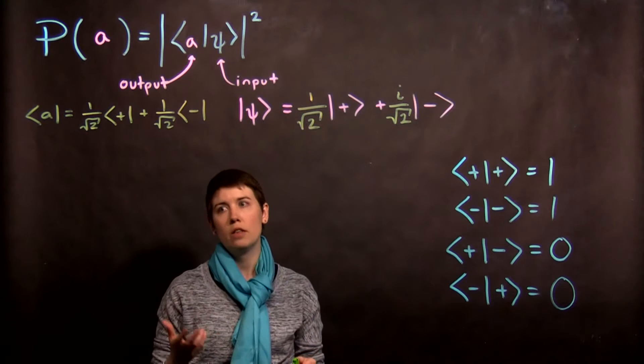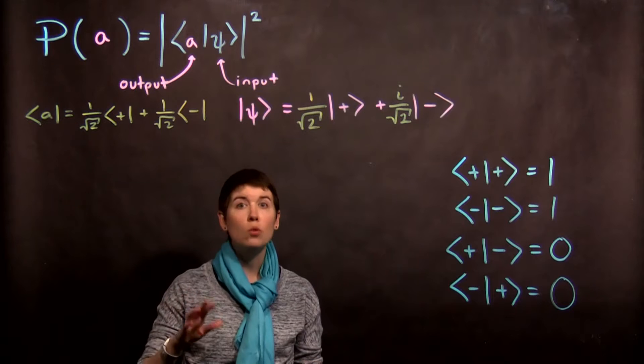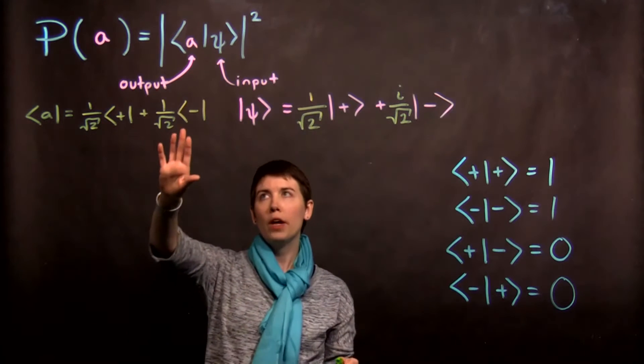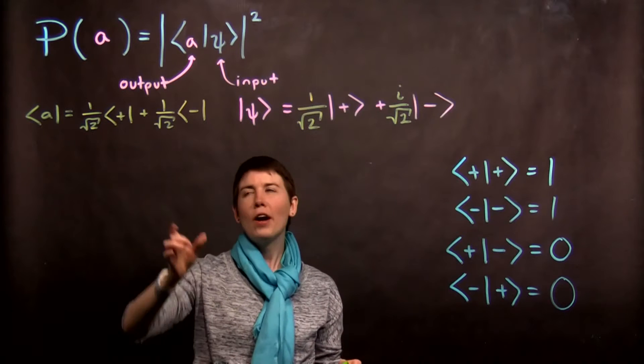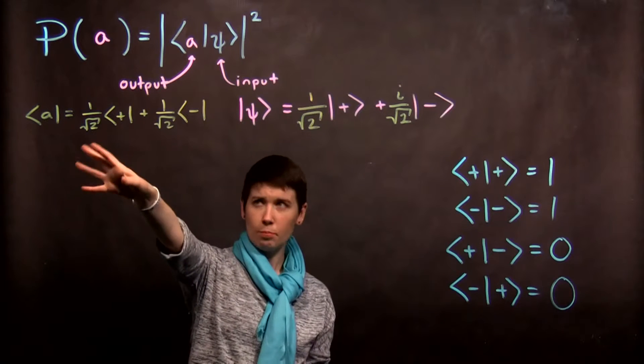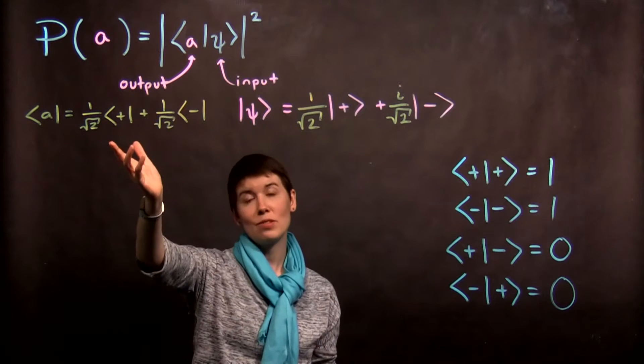To reinforce this idea of using the bracket notation, I'm going to work through an example where we're going to look at the probability of measuring state A, where A is in fact a more complicated state, at least expressed in the Z basis.